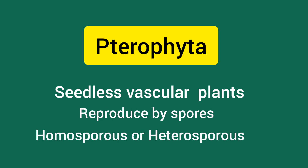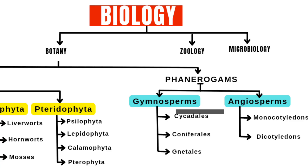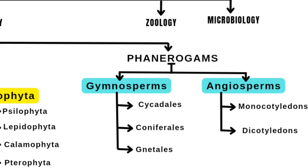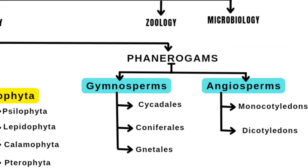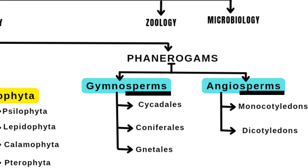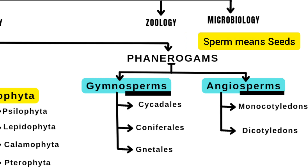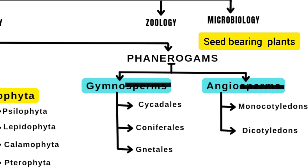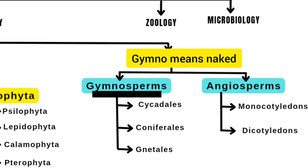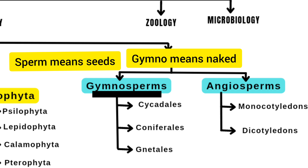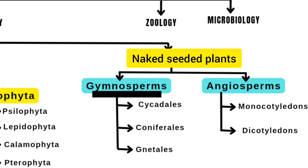Now we will discuss phanerogams — as mentioned earlier, they are seed-bearing flowering plants. Phanerogams are further differentiated into two parts: gymnosperms and angiosperms. Both share the root word 'sperm,' meaning seeds — both groups are seed-bearing plants. 'Gymno' means naked, so gymnosperms are naked-seeded plants; in this group seeds are not enclosed in fruits.